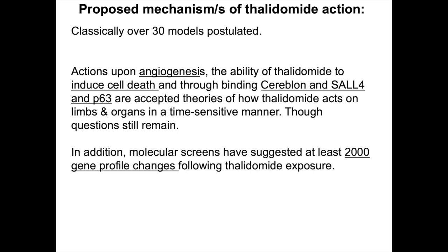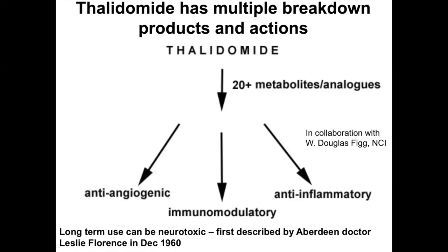Molecular screens done on embryos treated with this drug show 2,000 gene profile changes following exposure — potentially an awful lot of genes could be affected. Now, thalidomide has multiple actions: it's anti-angiogenic, anti-inflammatory, affects the immune system, and affects nerves. So which of those actions causes the embryonic damage? Is it the blood vessels? The inflammatory system? The immune system? The nerves? We know the drug has all those actions — so which one causes the problem?